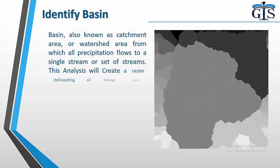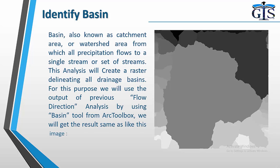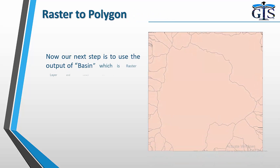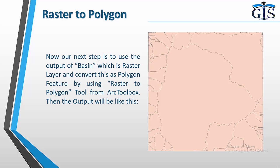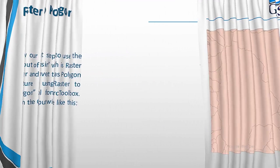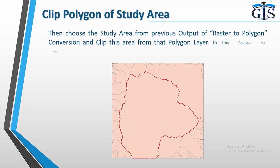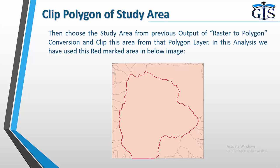A basin, also known as a catchment area or watershed area, is the area from which all precipitation flows to a single stream or set of streams. This analysis creates a raster delineating all drainage basins. For this purpose, we use the output of the previous flow direction analysis using the basin tool from ArcToolbox and get a result like the shown image. The next step is to take the basin raster layer and convert it to a polygon feature using the raster to polygon tool from ArcToolbox. Then we select the study area from that polygon layer and clip it — using the red marked area shown in the image.